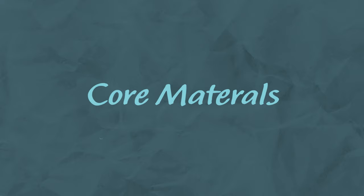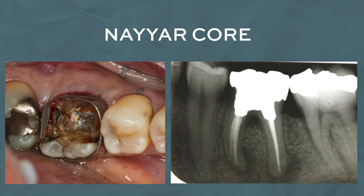You can choose to place a Nayyar core with amalgam or a composite core — each has advantages and disadvantages. For a Nayyar core, you can prep two to four millimetres into the canal and again use a two-millimetre IRM plug to provide an extra seal beneath. However, amalgam will show through, so if you're planning for an aesthetic restoration like an e.max crown or a bonded restoration, it would be preferable to use a composite core.